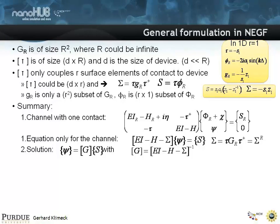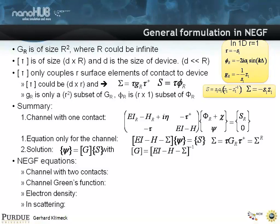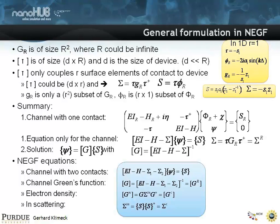Okay? So these NEGF equations work for channels with two contacts. With the channel green functions and you can compute the electron density and the in-scattering in the following form. So here is the self-energy, gr. Here are the in-scattering self-energies. And here are the boundary-conditioned self-energies.